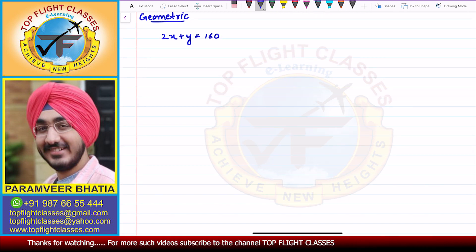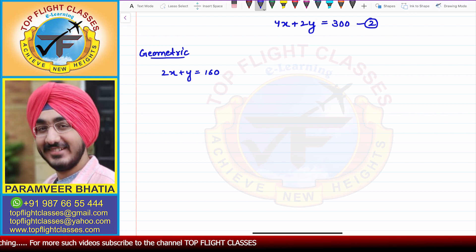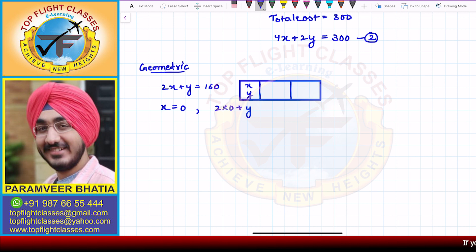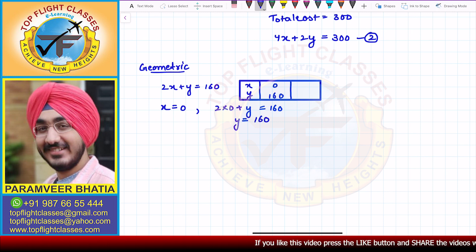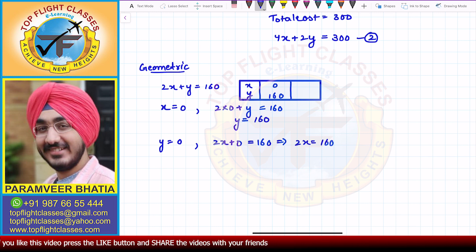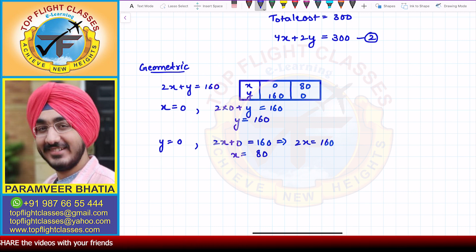For the first equation, putting x equal to 0 gives y equal to 160, so the point is (0, 160). Putting y equal to 0 gives 2x equals 160, so x equals 80, giving the point (80, 0).